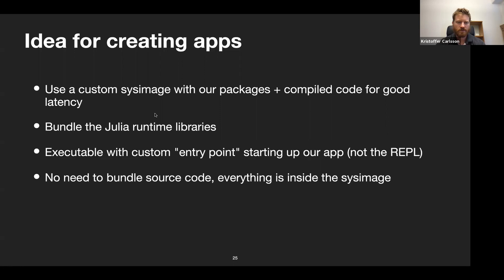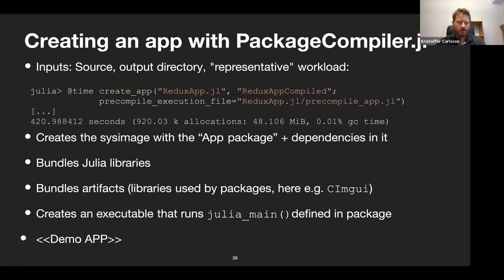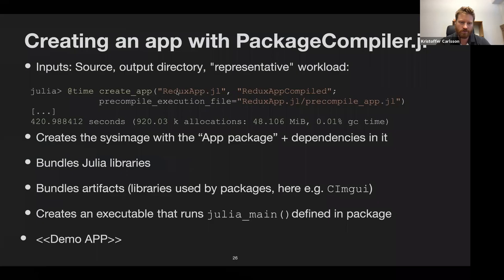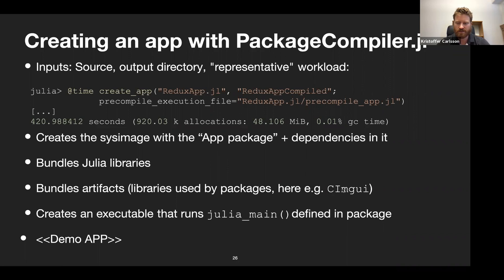We don't need to bundle any source code because everything is stored inside the sysimage. The way this works with PackageCompiler: you give it the path to where your app is and where the compiled app should go, and optionally a precompile execution file like with sysimages. If I call create_app with this Redux app, PackageCompiler creates a sysimage with the app and its dependencies, bundles all Julia libraries and artifacts (like the CImGui library this app uses), and creates an executable that calls julia_main in the package.